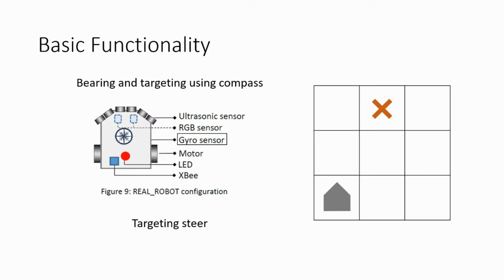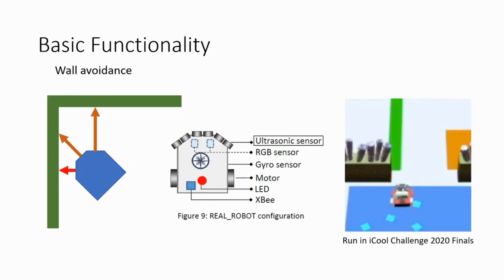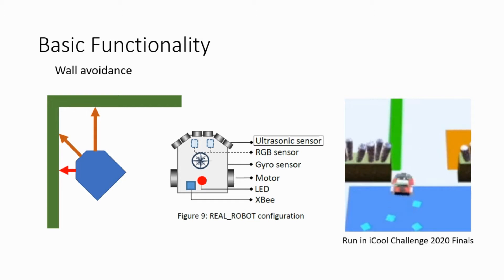The gyrosensor and the position data are used to determine the required movement of the robot. We can obtain the bearing of the robot using the gyrosensor. We can also calculate the direction vector from the robot's current position to a target position. Then we steer the robot such that it rotates towards the targeting vector. This is the targeting steer. We also need to incorporate steering to avoid obstacles in the robot's path, and how quickly the robot steers away from walls and obstacles should depend on the proximity between the robot and the closest wall.